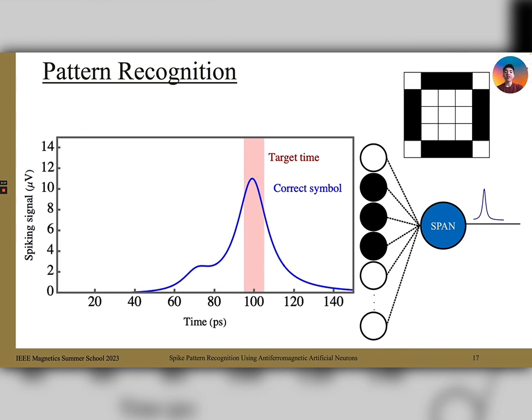After training, when the correct symbol is fed into the neural network, the AFM SPAN will spike within a 10 picosecond time window of the target time. And when the incorrect symbol is inputted, the SPAN will spike outside the target time window. Therefore, we have successfully trained the neural network to recognize symbols made from a grid.